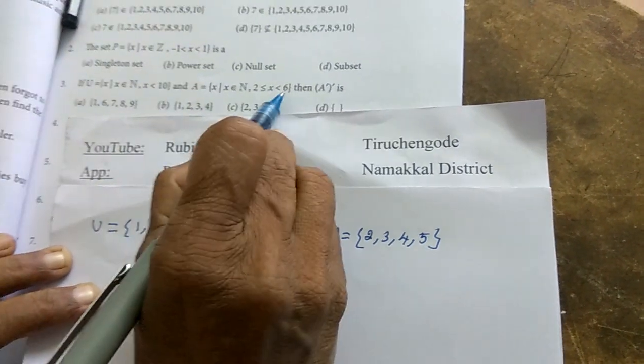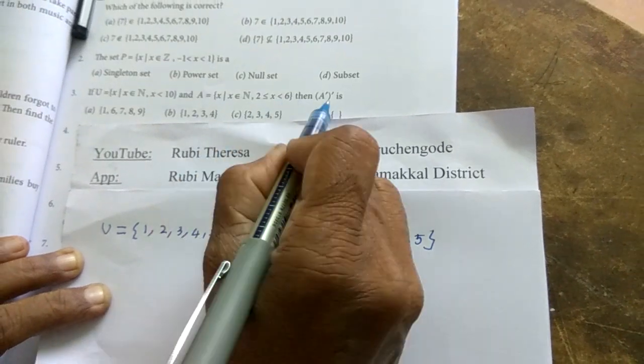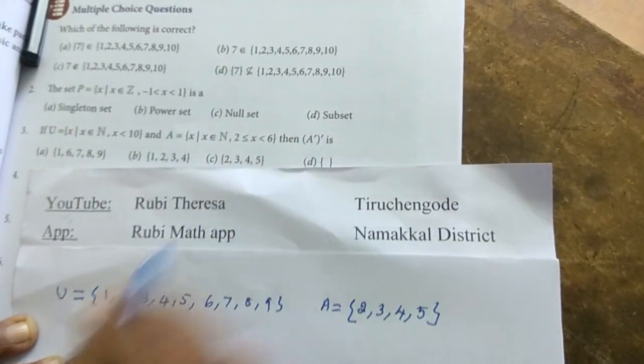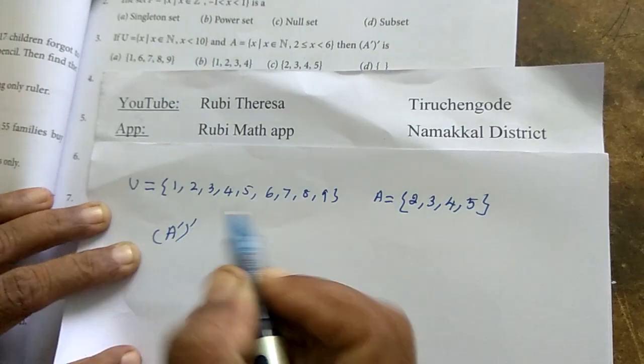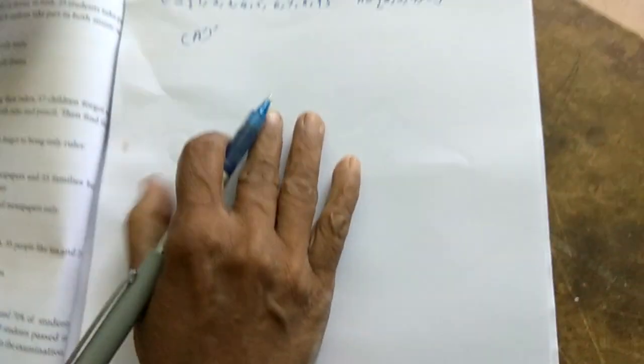6 you should not write. Why? It is less than 6. What is the question they are asking? A dash, the whole dash. So first let us find out A dash.